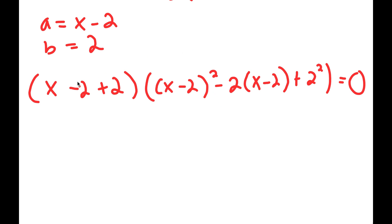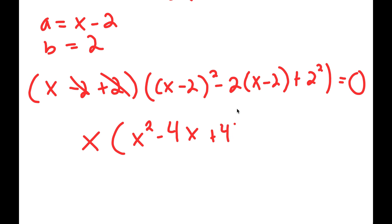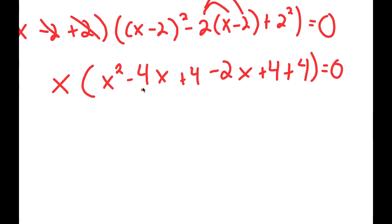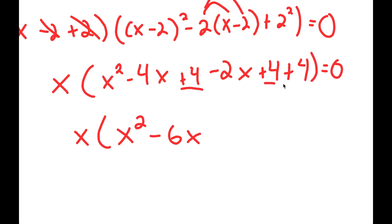Now we can simplify this. Negative 2 and positive 2 cancel out, so I get x times x minus 2 squared, which is the same thing as x squared minus 4x plus 4. Then negative 2 times x minus 2 — distributing the negative 2 — gives negative 2x plus 4. And finally, 2 squared is equal to 4. Combining terms in the parentheses: x squared minus 6x plus 12, equal to 0.